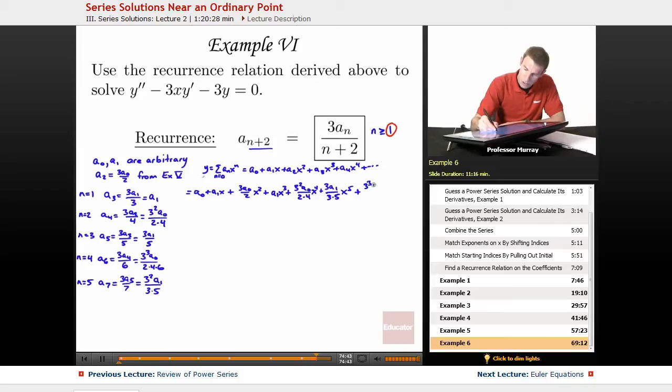Plus 3 cubed A0 over 2 times 4 times 6 X to the 6th, plus 3 squared A1 over 3 times 5 times 7 X to the 7th, and so on.